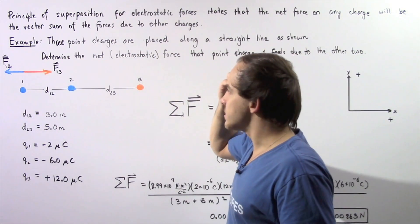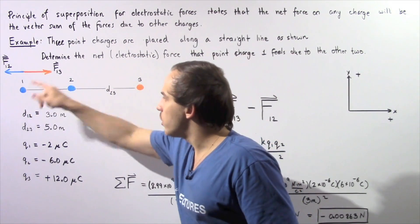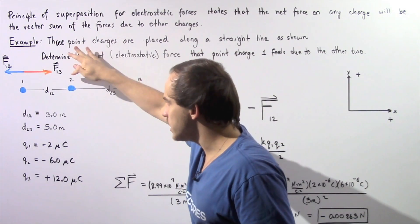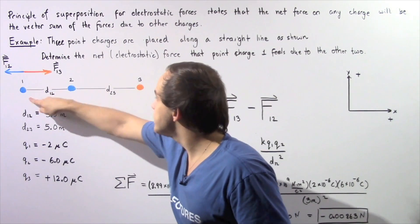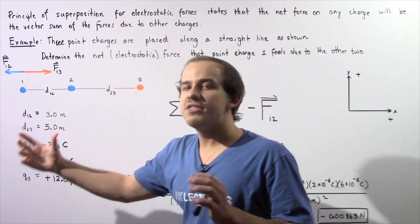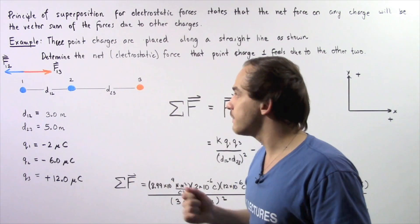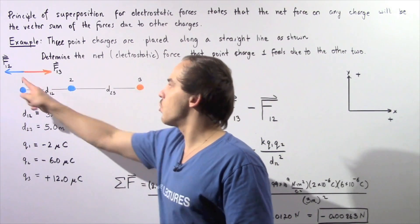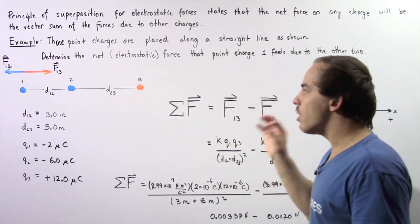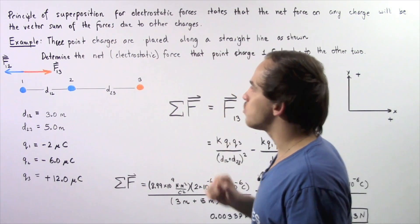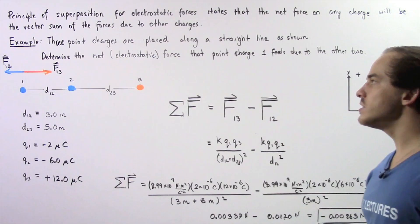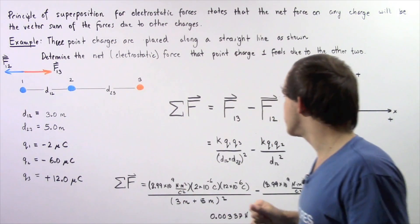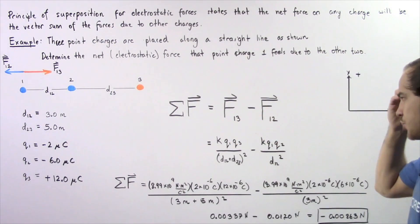The second force on point charge 1 is due to point charge 3, labeled F13. Because these charges have opposite signs, they attract one another, so the electrostatic force points in the positive direction. So F13 is our positive force and F12 is our negative force. According to the principle of superposition, the net electrostatic force equals F13 minus F12.